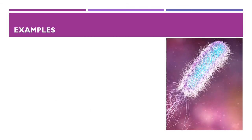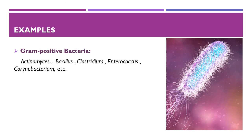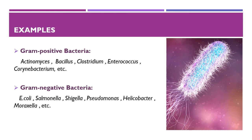Examples of gram-positive bacteria are: Actinomyces, Bacillus, Clostridium, Corynebacterium, Enterococcus, Lactobacillus, Mycoplasma, Listeria, Staphylococcus, Streptococcus, and Streptomyces. Examples of gram-negative bacteria are: E. coli, Salmonella, Shigella and other Enterobacteriaceae, Pseudomonas, Moraxella, Helicobacter, acetic acid bacteria, etc.